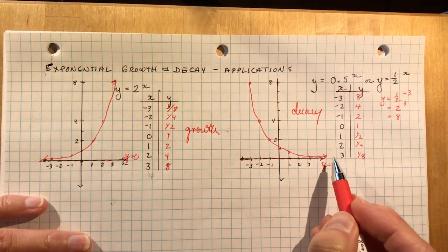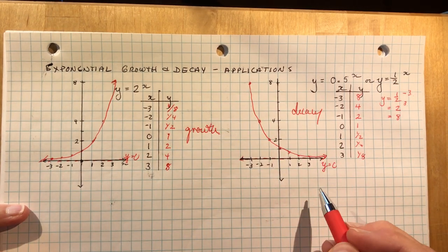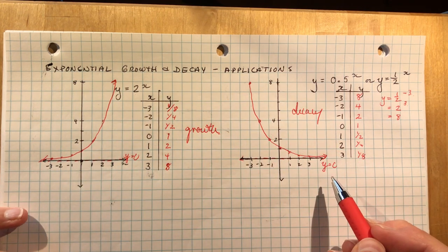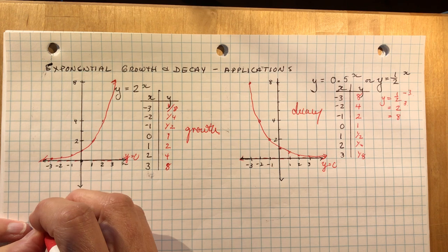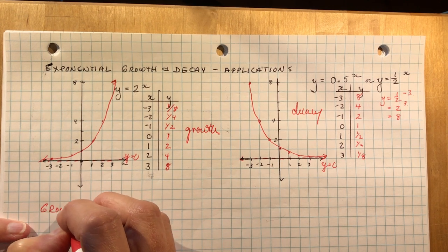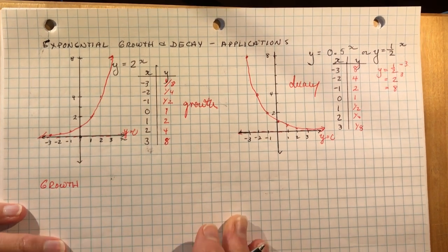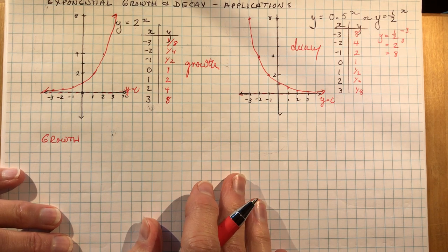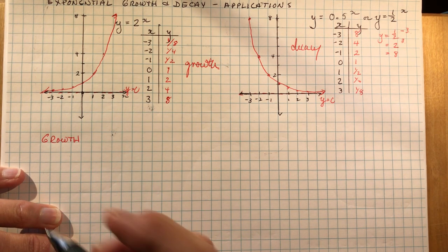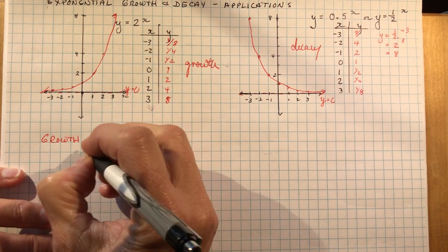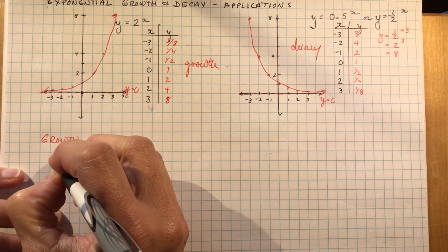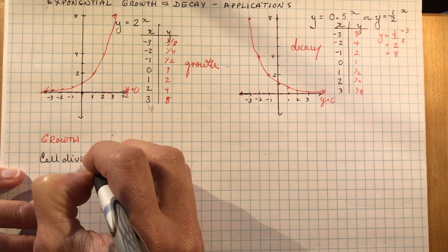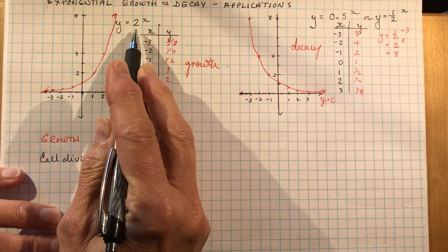So not only do you have the graphs of the functions that you can do to show growth and decay, we have equations that talk about different types of growth. So we're going to start with the growth equations first. I'm going to explain them fairly quickly. The equations are pretty basic.